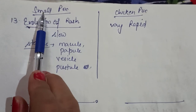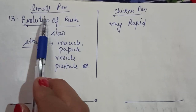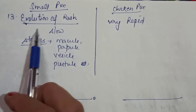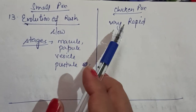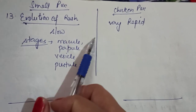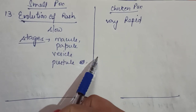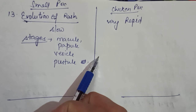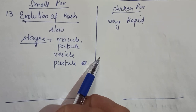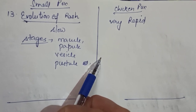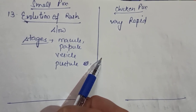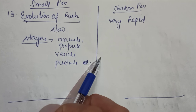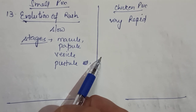To summarize: in smallpox, one stage develops at a time; in chickenpox, different stages develop simultaneously. This is the main difference between smallpox and chickenpox. Thanks for watching — please like, comment, share, and subscribe.